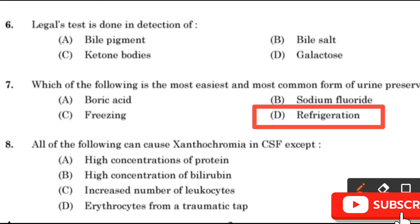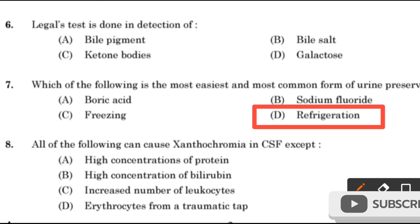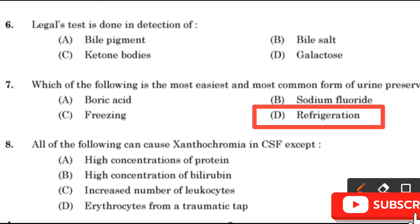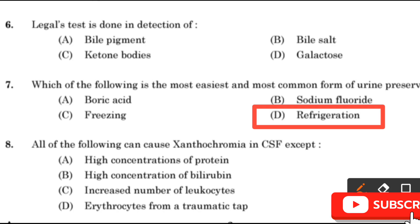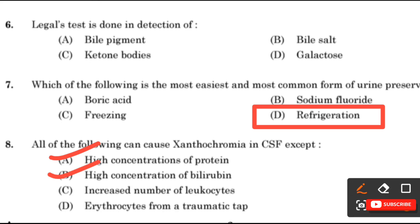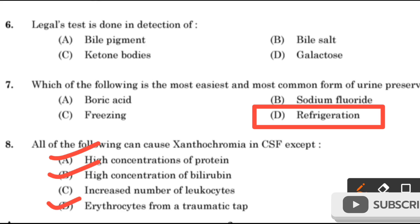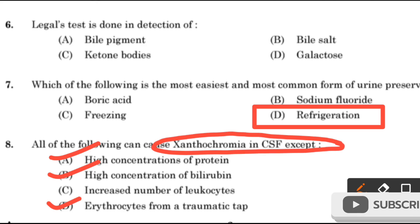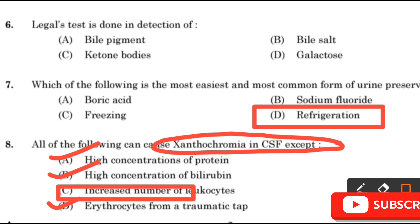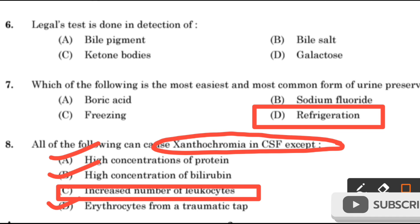Question 8: All of the following can cause xanthochromia in CSF except — High concentration of protein, High concentration of bilirubin, Increased number of leukocytes, or Erythrocytes from atraumatic tap? High concentration of protein, high concentration of bilirubin, and erythrocytes from atraumatic tap all cause xanthochromia. The right answer is option C: Increased number of leukocytes, which does not cause xanthochromia.